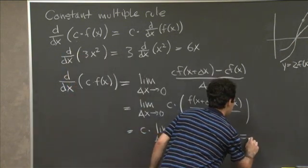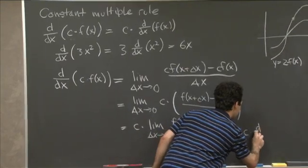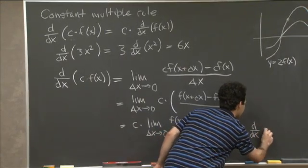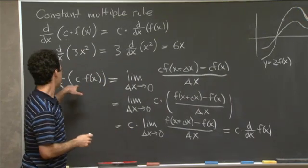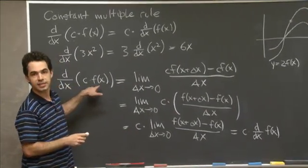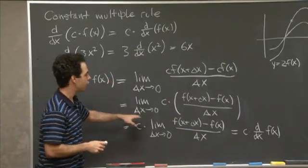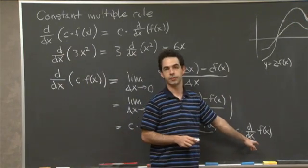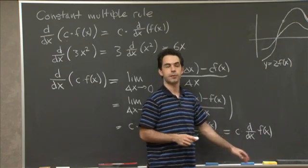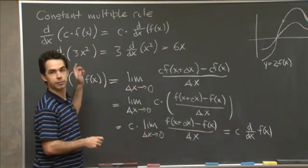And this limit here is just the definition of the derivative of f of x. So this is equal to, by definition, c times d by dx of f of x. So we started with the derivative of c times f of x, and we showed that this is equal to c times the derivative of f of x. So that's exactly what we wanted. So that proves the constant multiple rule.